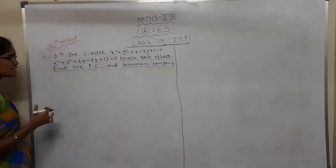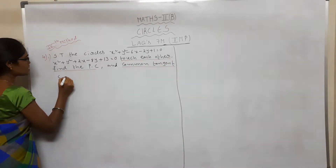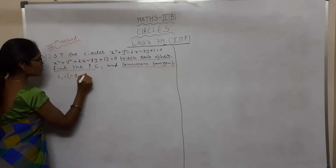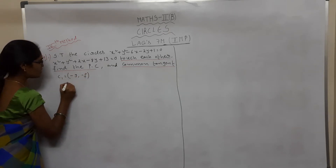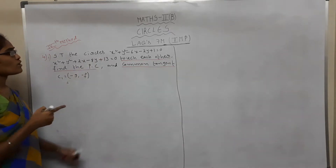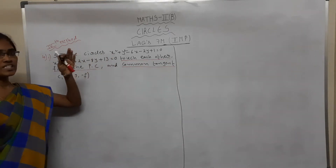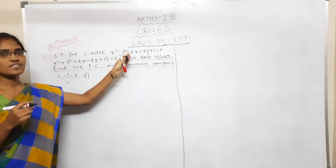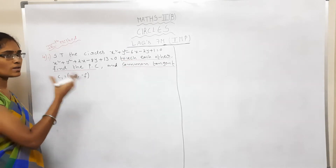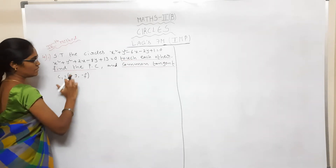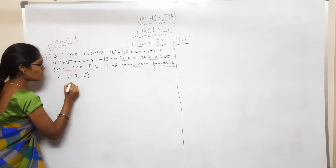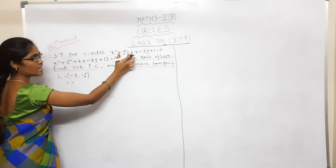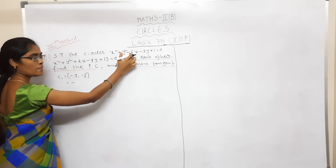First, find the centers and radii. Center C1 is found using the center formula: (−g, −f). The general circle equation is x² + y² + 2gx + 2fy + c = 0. Comparing, g = −3 (half of the x-coefficient, which is −6), so minus g = 3. The x coefficient here is 6.